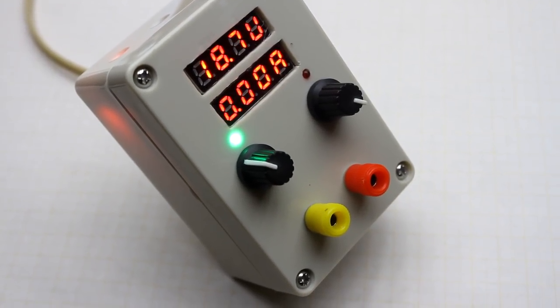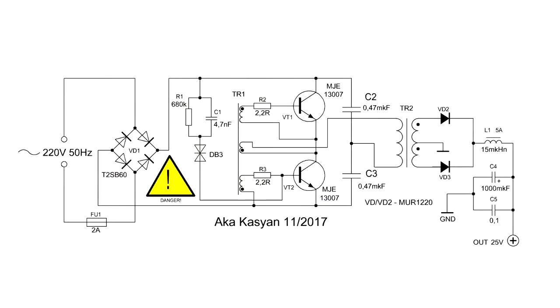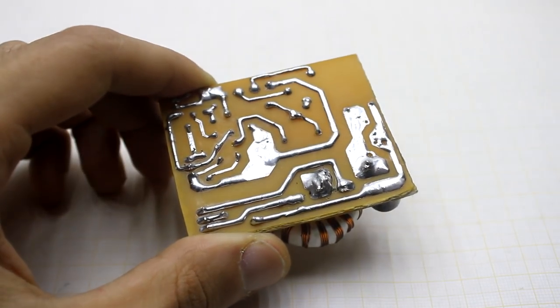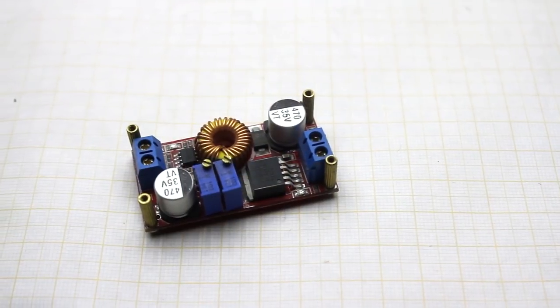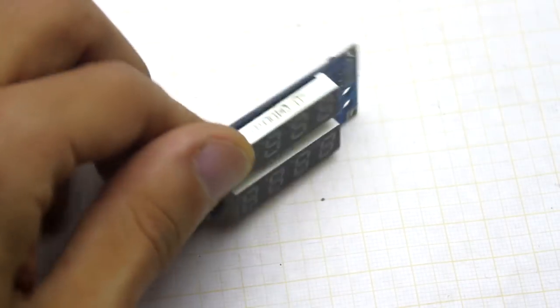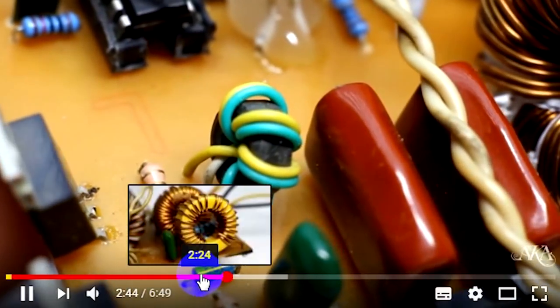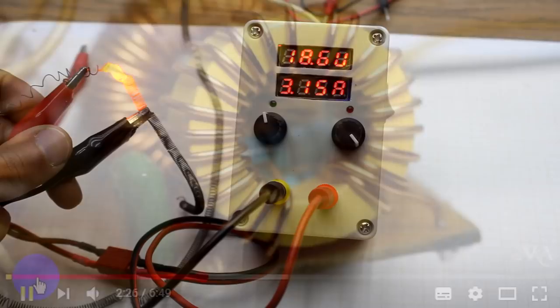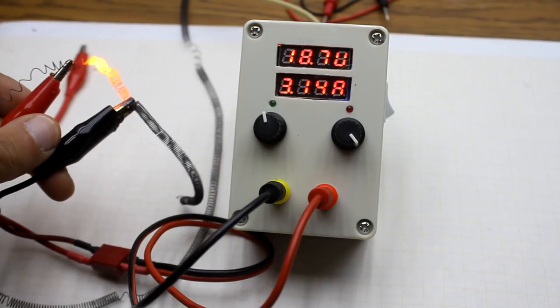Friends, that's all. I remind that the full archive with the schematic and the printed circuit board are in the description under the video. Also, there are all the links to the components for assembling this power supply, as well as a link to the video with the assembly and configuration of the electronic transformer. Goodbye. With you was Kaseyan TV.